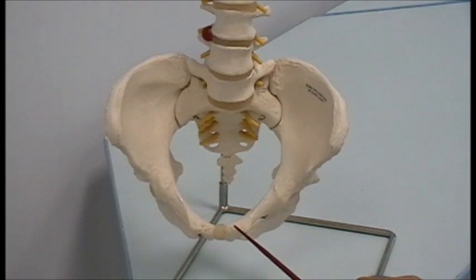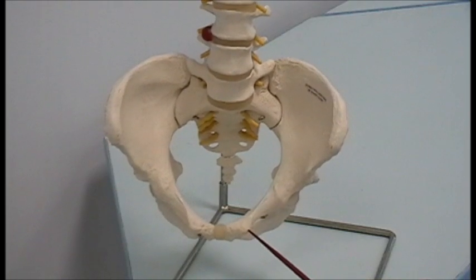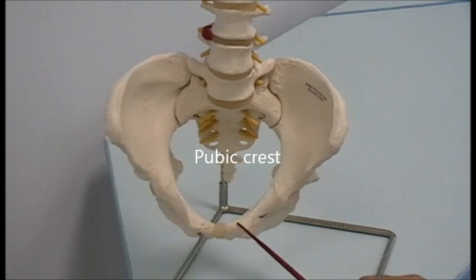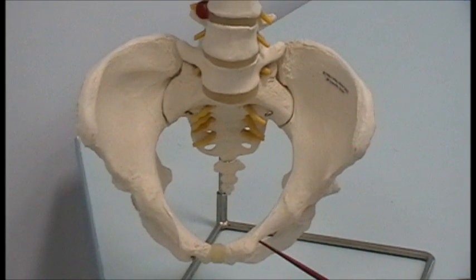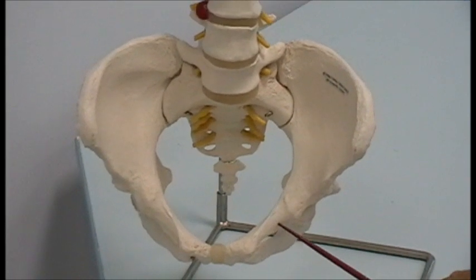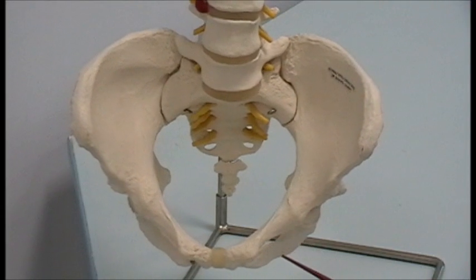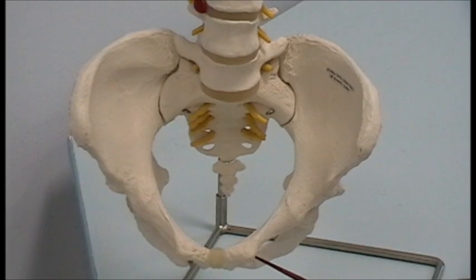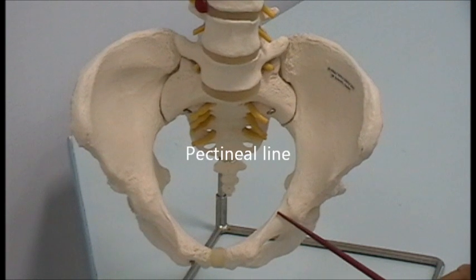This piece of bone between the symphysis pubis and the pubic tubercle is called the pubic crest. Lateral to the pubic tubercle and constituting part of the superior ramus of the pubis — because the pubis consists of a body, superior ramus, and inferior ramus — on the superior ramus of the pubis there is a line called the pectineal line.